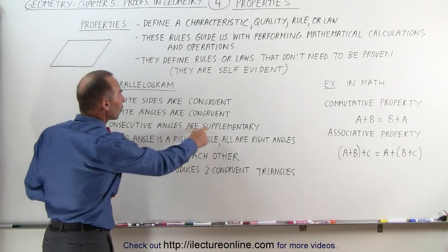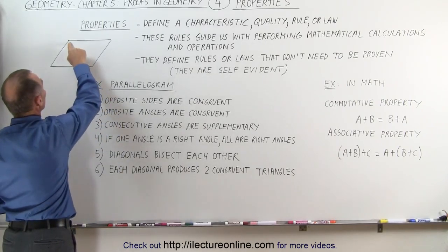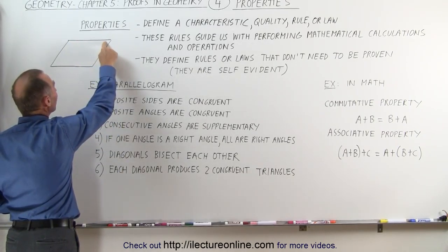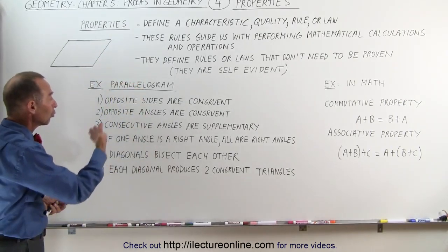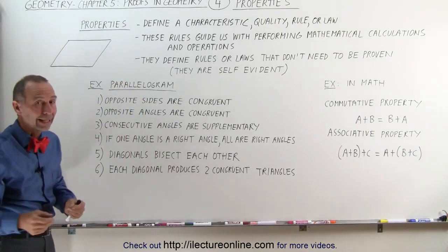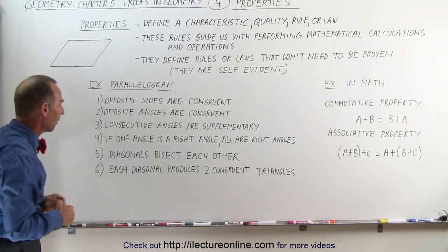Consecutive angles are supplementary. Here's one angle. Here's a consecutive angle. Add those two angles together, they add up to 180 degrees. Therefore, they're assumed to be supplementary. That is a property of a parallelogram.